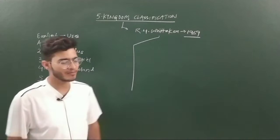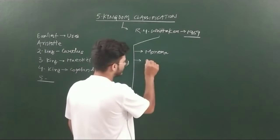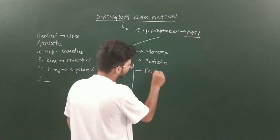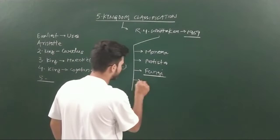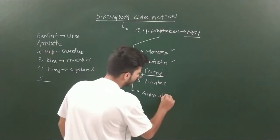The five kingdoms are: first Monera, second Protista, third Fungi which was newly introduced in Whittaker's system, and then Plantae and Animalia. Plantae and Animalia were already given by previous scientists, but Fungi was introduced by Copeland and continued in Whittaker's system.